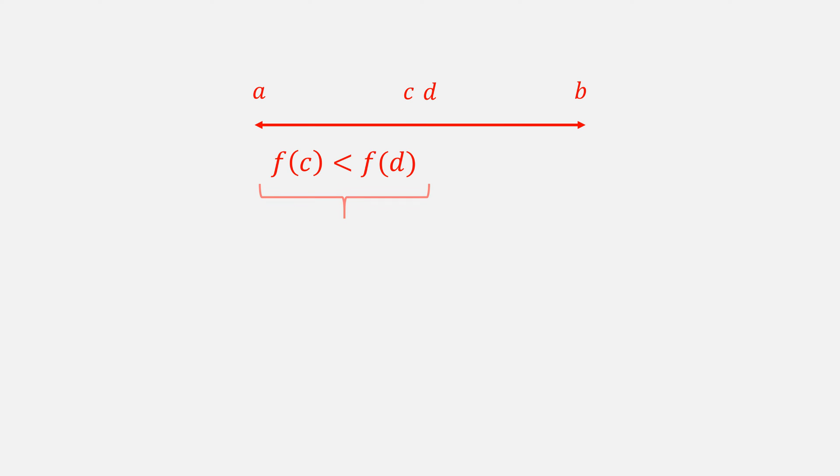As an example, let's just say that F of C was less than F of D, giving us this new interval, which is about half the size of the old one. We would then repeat the process.